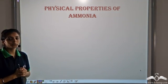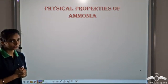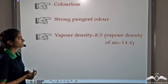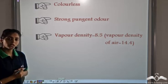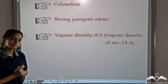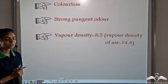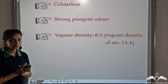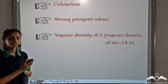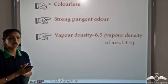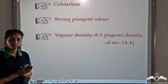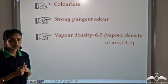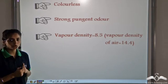Let's study the physical properties of ammonia. Ammonia is a colourless gas. It has a strong pungent odour and it has a vapour density of 8.5. The vapour density of air is 14.4.